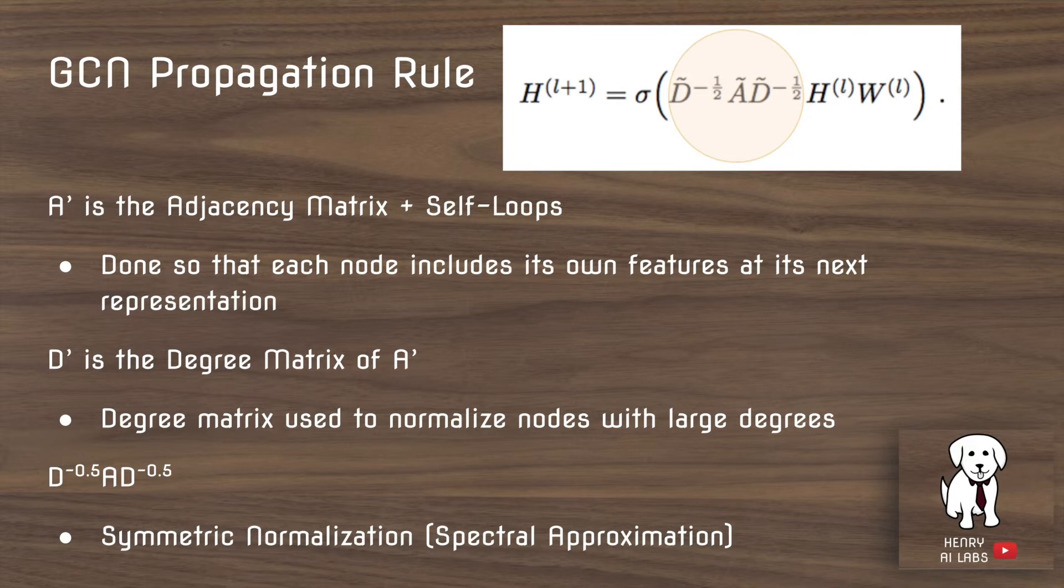So then the other key idea in this paper, graph convolution networks, is the symmetric normalization, where rather than just doing the inverse degree matrix times the adjacency, they take the negative one half and put it on each side of the A. And this is to further aid with varying degree distributions.